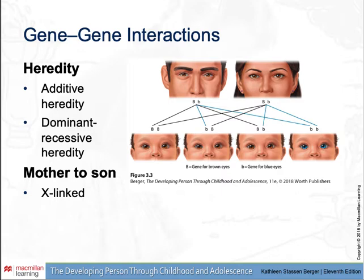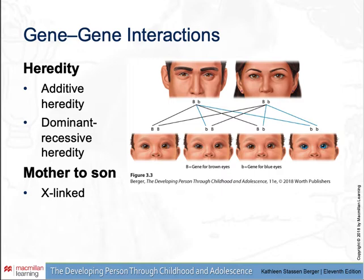Gene-gene interactions and heredity: additive heredity refers to genes that add something to the phenotype — many genes adding up to influence traits such as height. Dominant and recessive heredity: dominant genes are far more influential than recessive genes and can completely control the phenotype with no noticeable effect from the recessive gene. For example, if both parents carry the recessive blue eye gene, there is a 1 in 4 chance their child will have blue eyes.